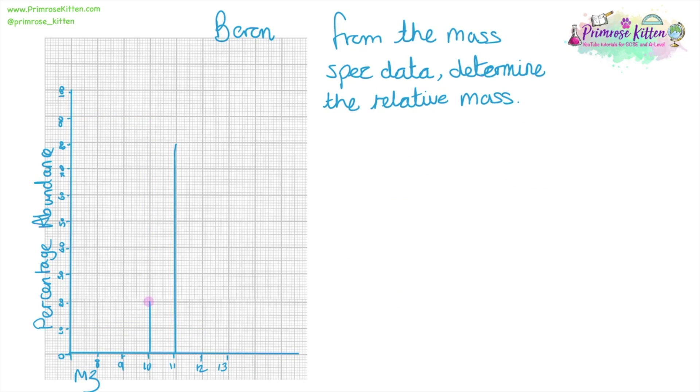Another example here for boron. Boron, we can see there are 20% of them have a mass of 10 and 80% of the atoms within a sample had a mass of 11.